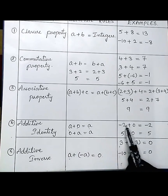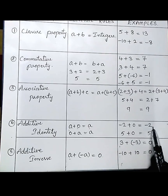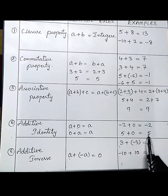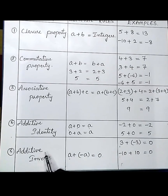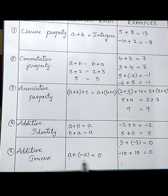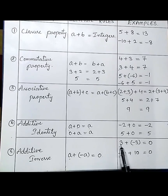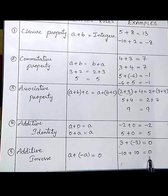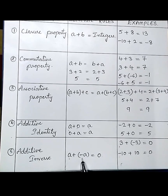Additive identity: if a is an integer and you add 0, you get the same integer. Like minus 2 plus 0 equals minus 2, and 5 plus 0 equals 5. Additive inverse: if a is an integer and you add minus a, you get 0. Like 3 plus minus 3 equals 0, and minus 10 plus positive 10 equals 0. In this case both integers are additive inverses of each other.